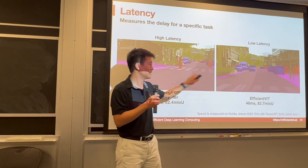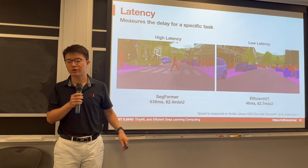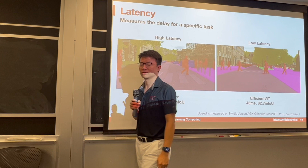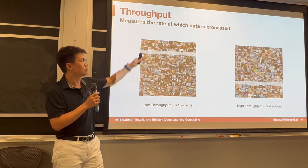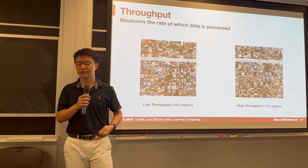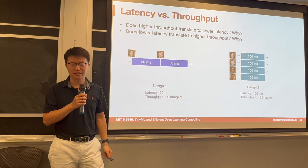Latency measures the delay of a specific task. For example, processing each frame requires 638 milliseconds for the baseline, versus only 46 milliseconds for EfficientViT. Throughput measures the rate at which data is processed. A low-throughput example processes 6 videos per second, while a high-throughput example like the Temporal Shift Module processes 77 videos per second.